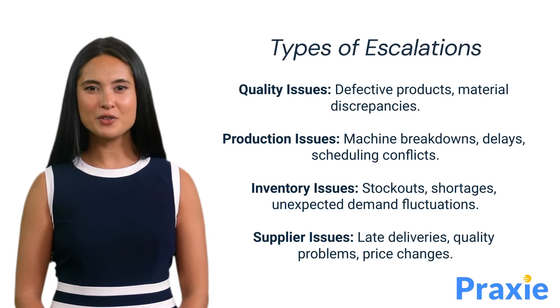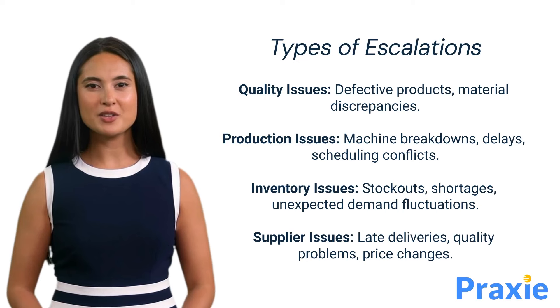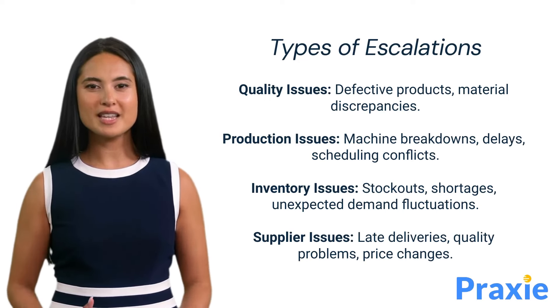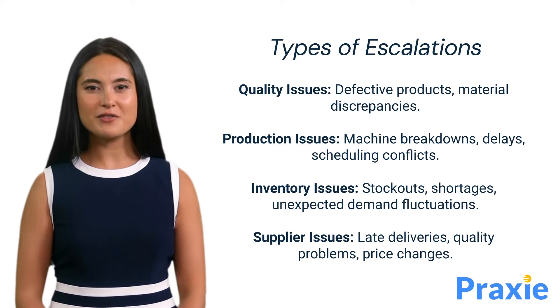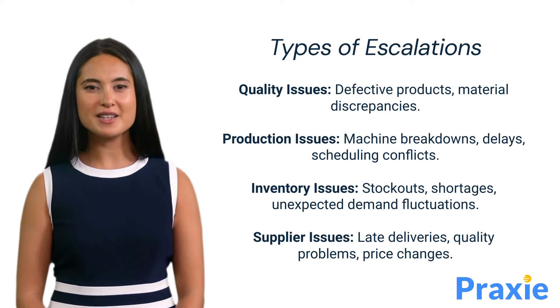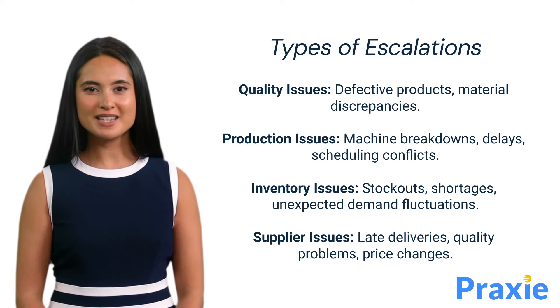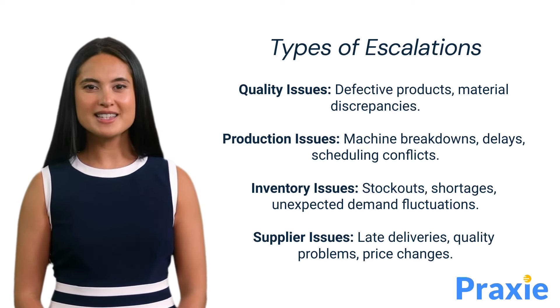The following types of escalation may occur in manufacturing: quality issues such as defective products and material discrepancies; production issues such as machine breakdowns, delays, and scheduling conflicts.